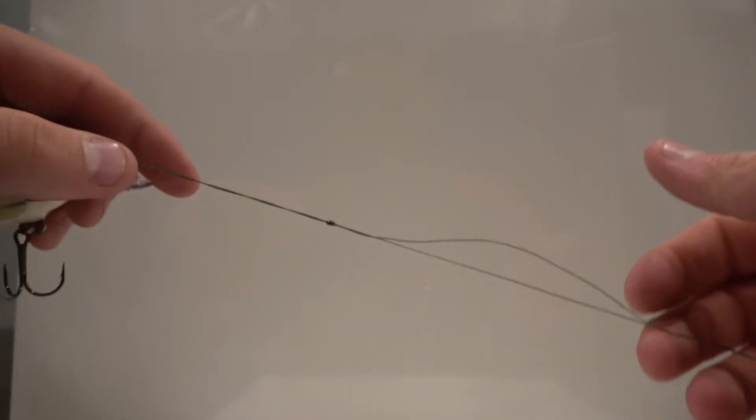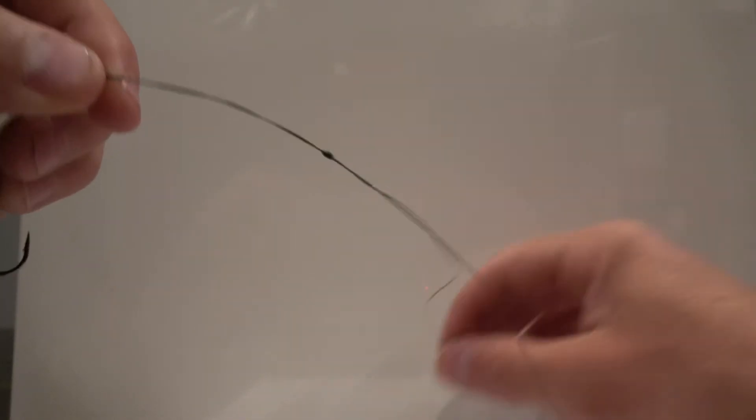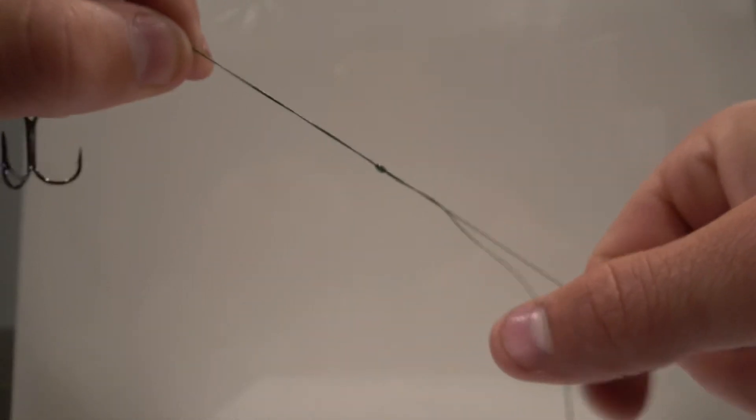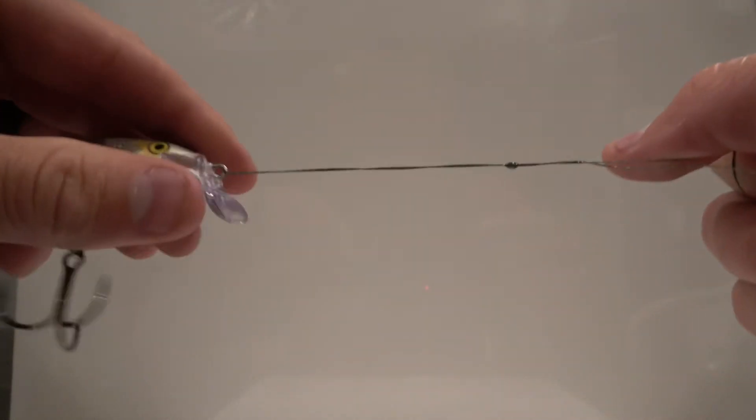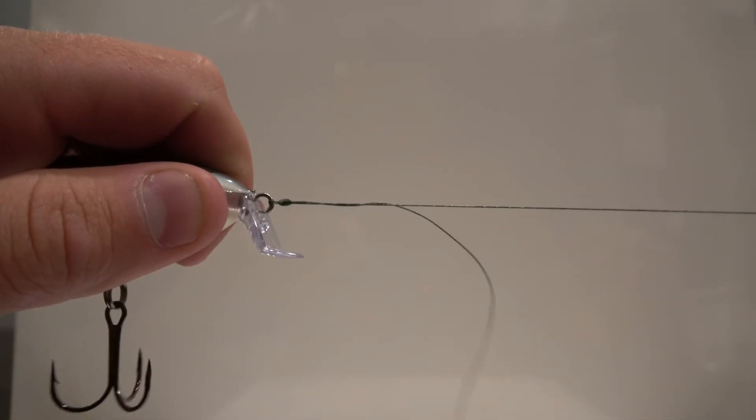And then I'll let go of the tagline, just let it flop over there, grab the main line, wrap it around my finger a few times. This is where you want to get it nice and tight. And then you'll just pull and there it goes right down to the lure.